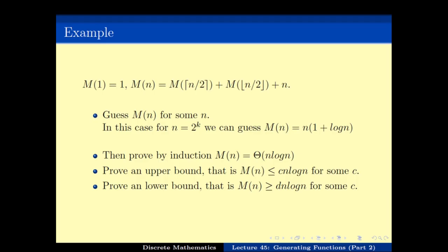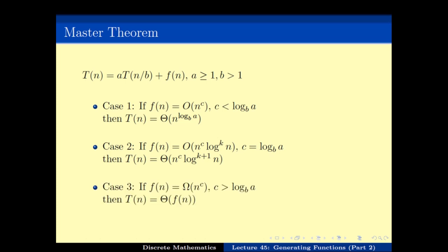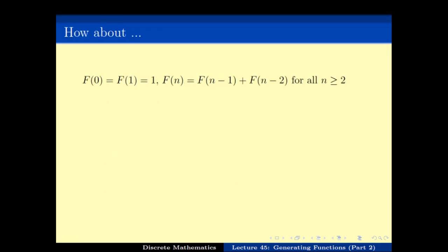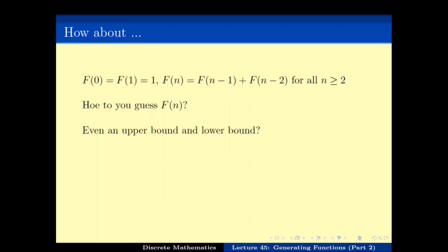This works well if the formula has some nice expression for particular values of n. We saw the master theorem, which helps us identify or guess the formula when the recurrence is of a particular kind. But what do we do with a recurrence like F₀ equals 0, F₁ equals 1, and Fₙ equals Fₙ₋₁ plus Fₙ₋₂? There is no easy way to guess Fₙ, and even getting a tight upper and lower bound is not easy. The explicit formula clearly shows that obtaining a proper theta notation for Fₙ is not a straightforward job.